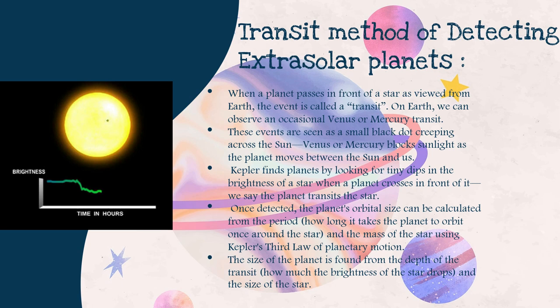Now let us see what a transit is. Most known exoplanets have been discovered using the transit method. A transit occurs when a planet passes between a star and its observer — within our solar system, this can be observed when Venus or Mercury travels between Earth and the Sun. Transits reveal an exoplanet not because we directly see it from light years away, but because the passing planet ever so slightly dims the star's light. This dimming is visible in light curves — graphs showing light received over time — which show a dip in brightness when the exoplanet passes in front of the star. Transits can also help determine the size of the exoplanet's orbit and the planet's size itself based on how much the star's brightness is lowered.